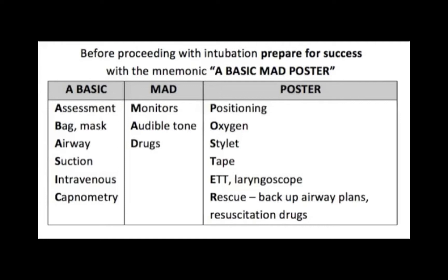Preparation for intubation begins with an assessment of the airway, discussed in the airway assessment video and Chapter 6 of the Ottawa Anesthesia Primer. A bag-mask system should be checked and capable of delivering oxygen with positive pressure. Oropharyngeal and nasopharyngeal airways should be immediately available, and a tonsillar Yankauer suction device should be available and placed next to the patient's head. Intravenous access should be established.